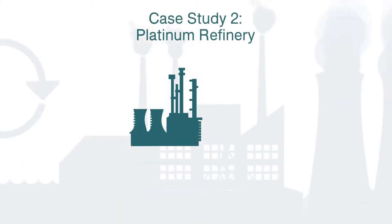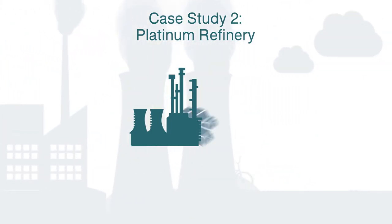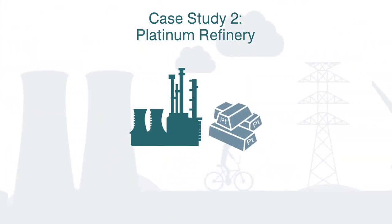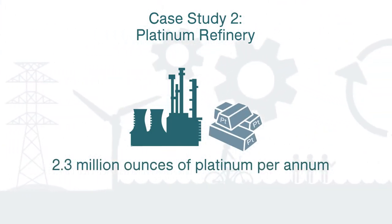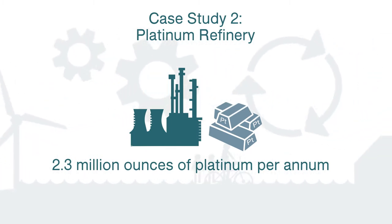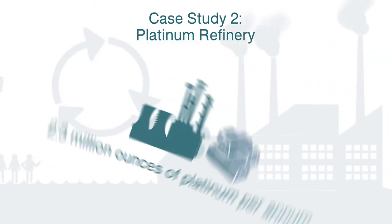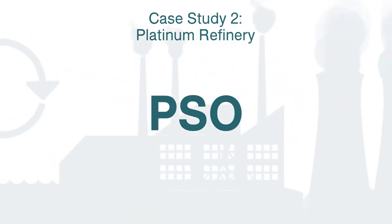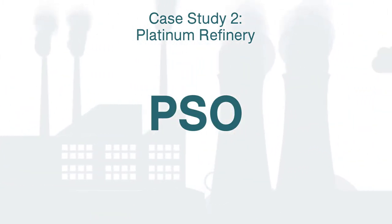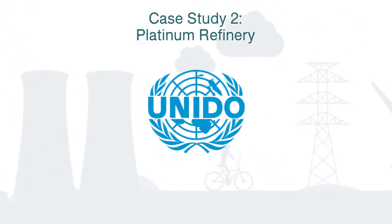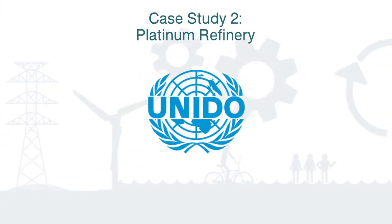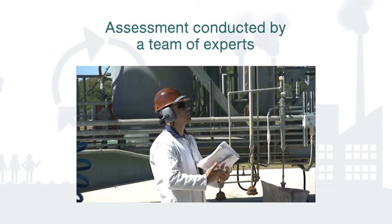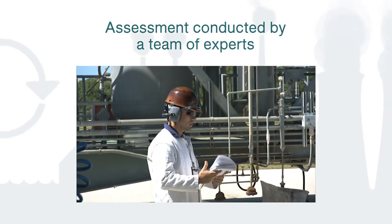A refinery includes base and precious metals with a current capacity of 2.3 million ounces of platinum per annum. A pump system optimization project was undertaken as part of the UNIDO Pumping Expert Level Development Programme, and the assessment was conducted by a team of experts from various industries.